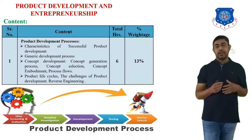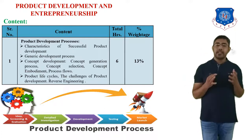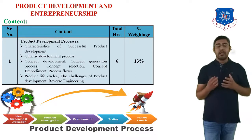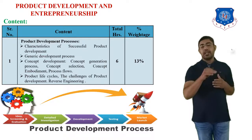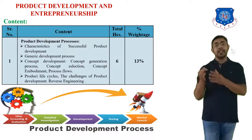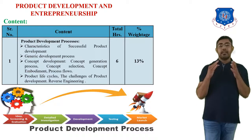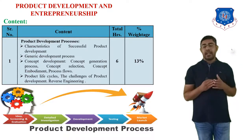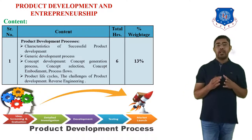According to the syllabus, we have to learn the generic product development process, as well as concept development, concept generation, and selection of concepts. At the end of the product development process, the product is launched in the market, and the actual life of that product begins — that is the product life cycle, which you also have to learn in this chapter. Additionally, you have to learn reverse engineering.